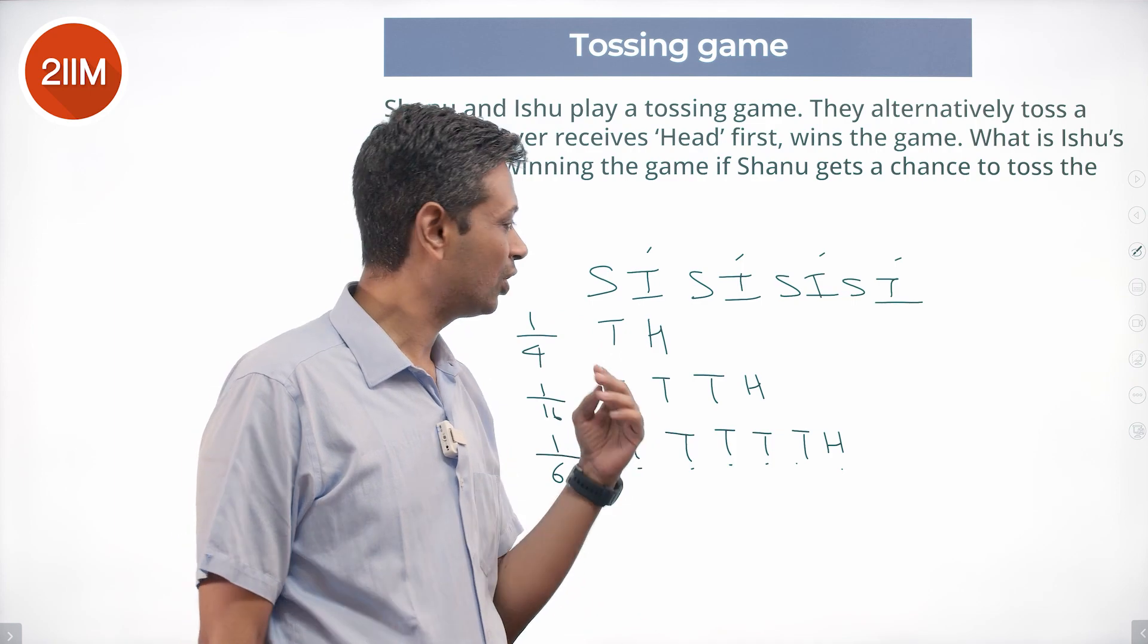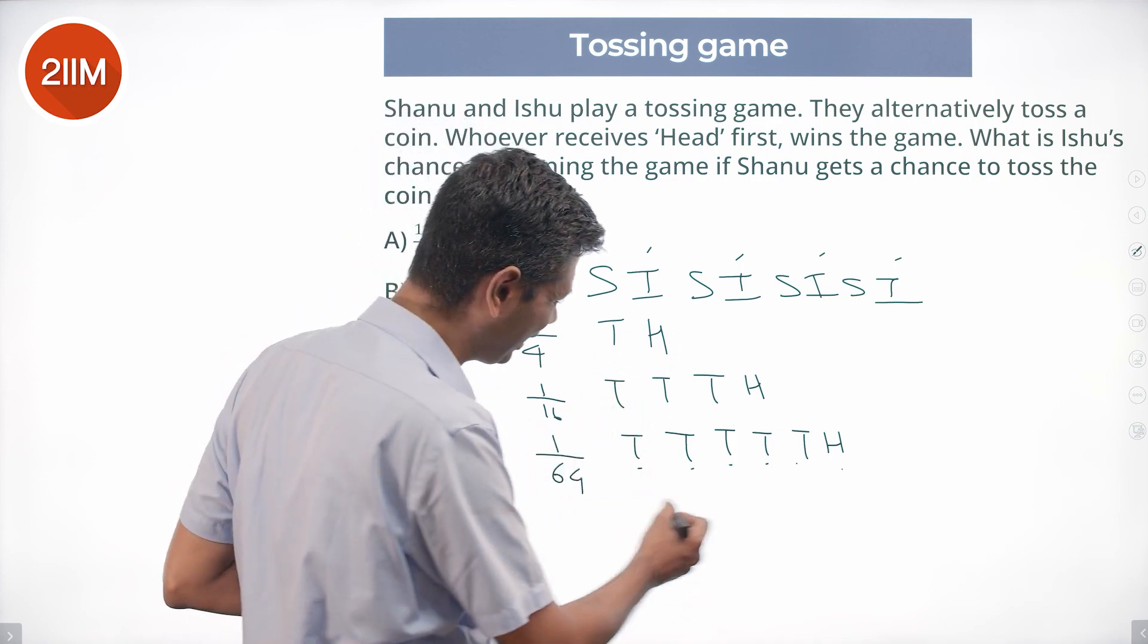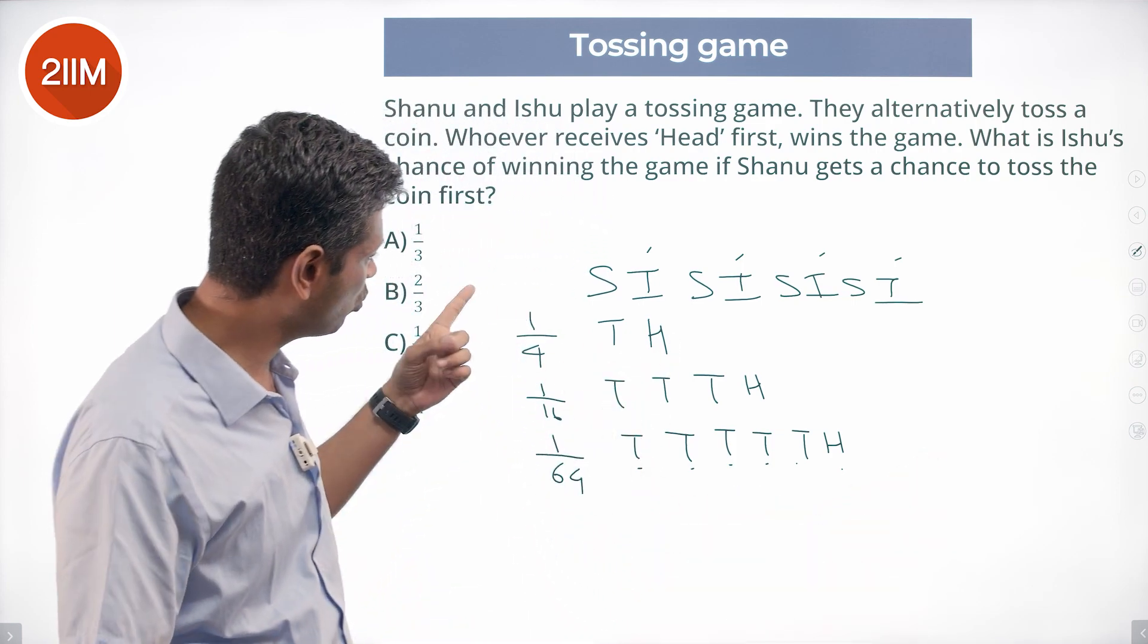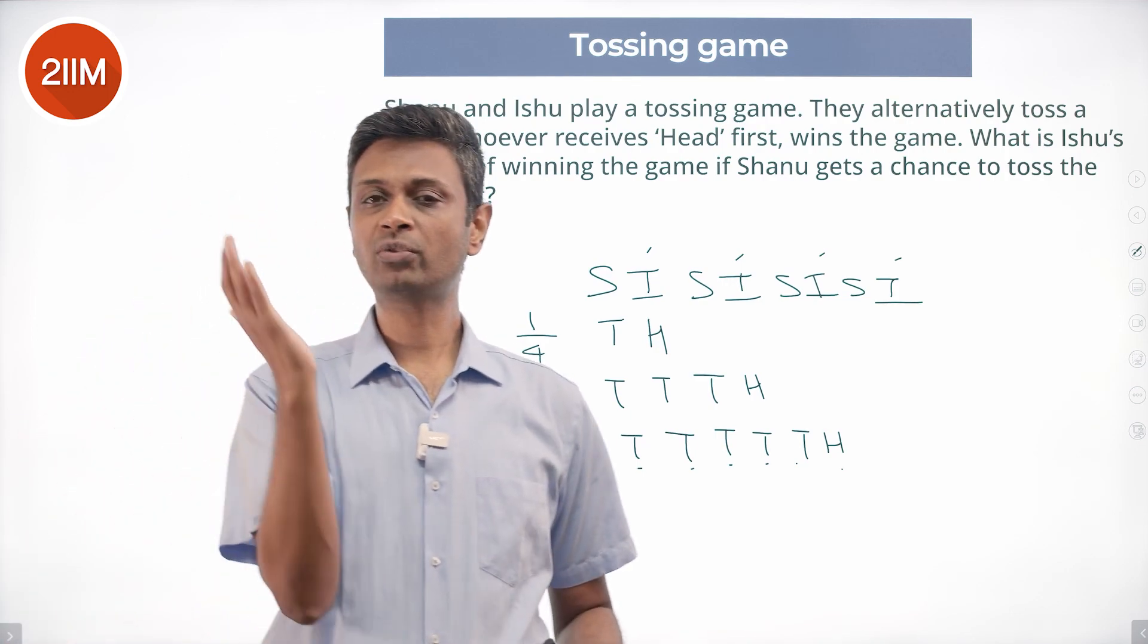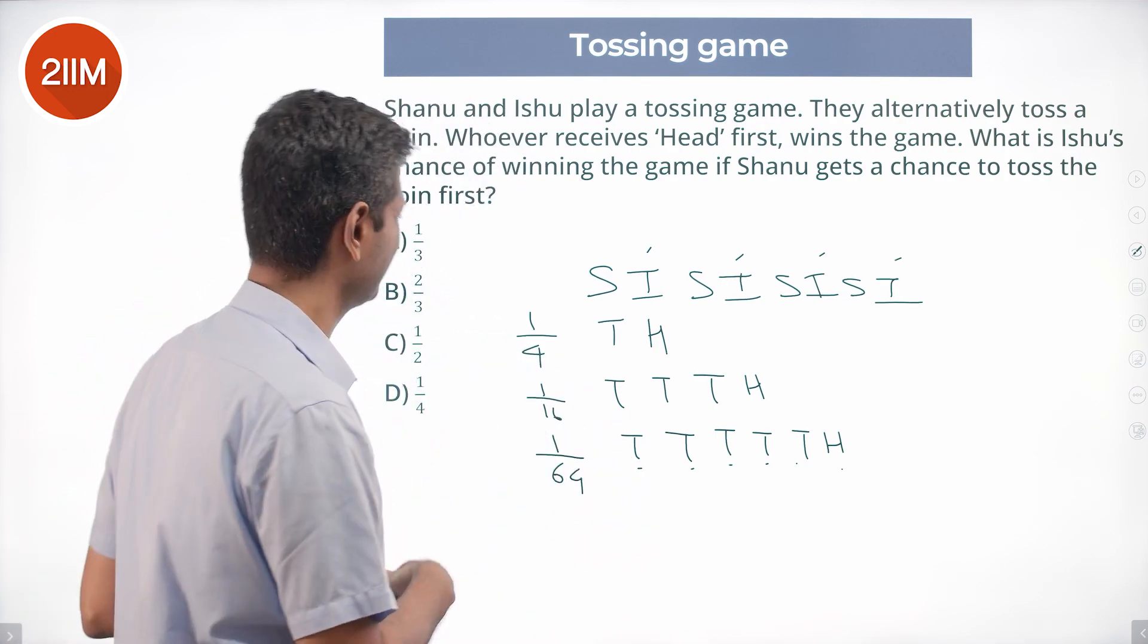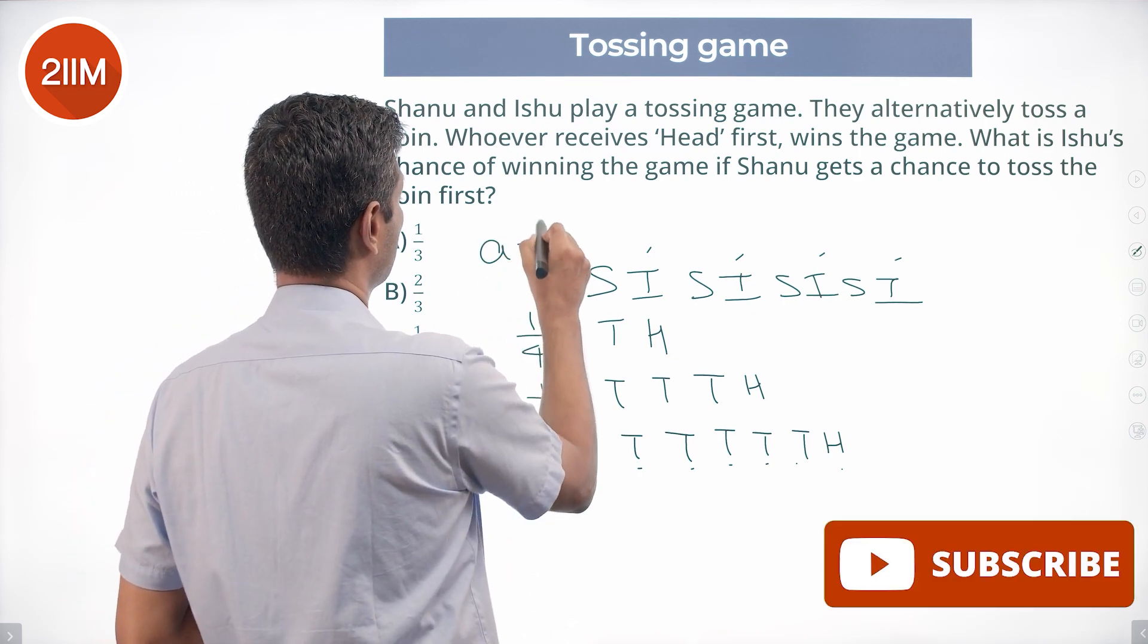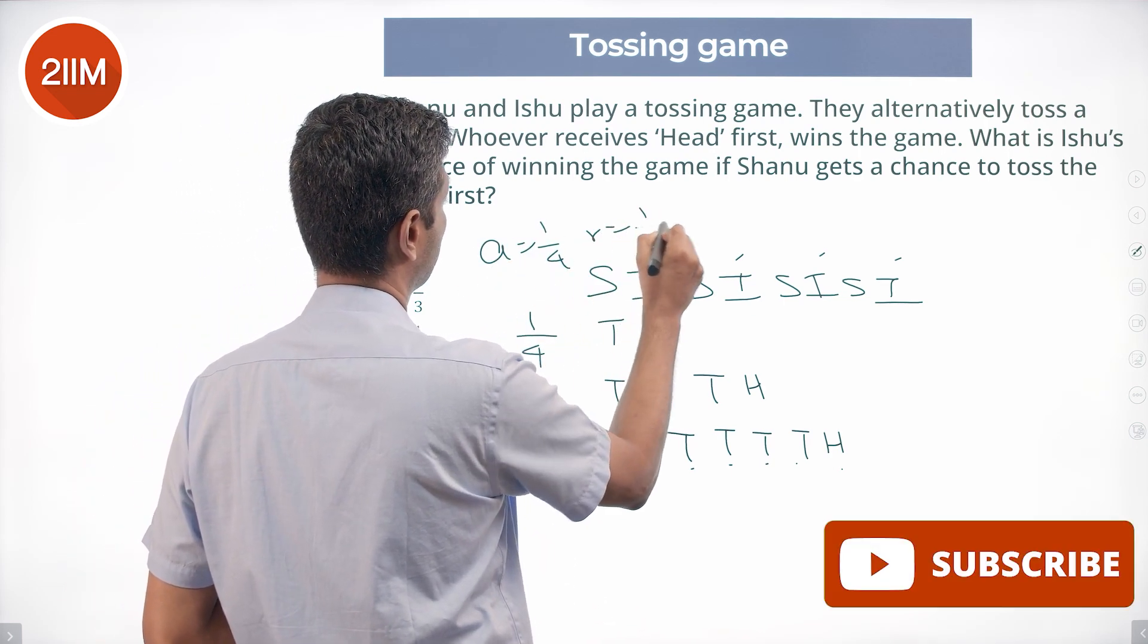Or this is just an infinite sequence starting from 1 by 4, with every subsequent term being 1 fourth of the previous term. The first term is 1 by 4, the common ratio is 1 by 4.